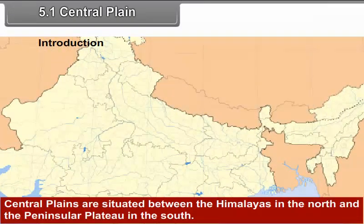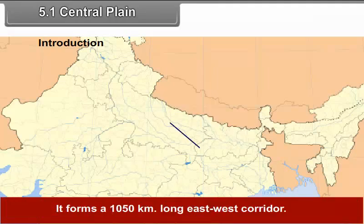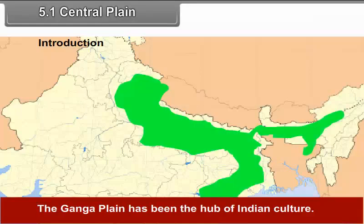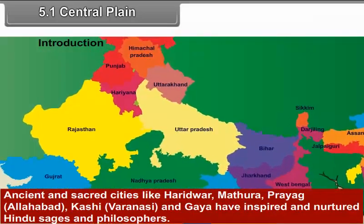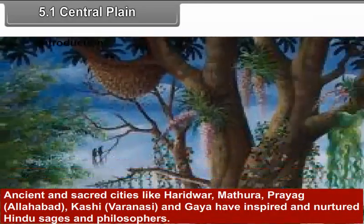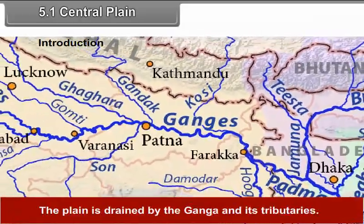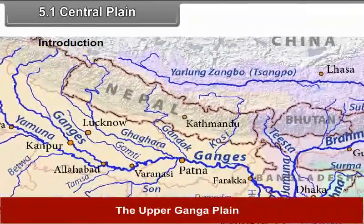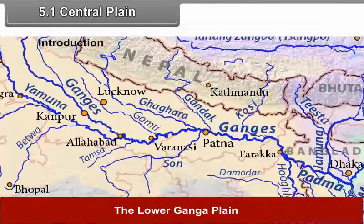5.1 Central Plain. The Central Plains are situated between the Himalayas in the north and the Peninsular Plateau in the south. It forms a 1050 km long east-west corridor. The plain is broad in the west and narrow towards the east. The Ganga Plain has been the hub of Indian culture. Ancient and sacred cities like Haridwar, Mathura, Prayag, Kashi and Gaya have inspired and nurtured Hindu sages and philosophers. The plain is drained by the Ganga and its tributaries. The Central Plain region is divided into the Upper Ganga Plain, the Middle Ganga Plain, and the Lower Ganga Plain.